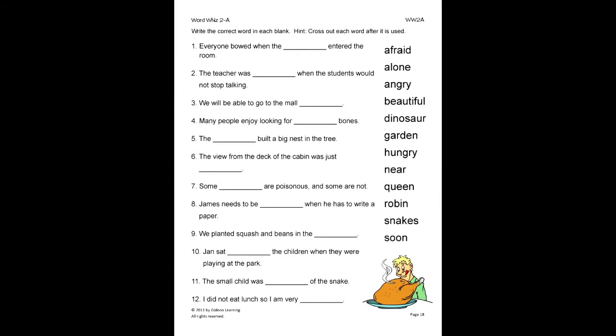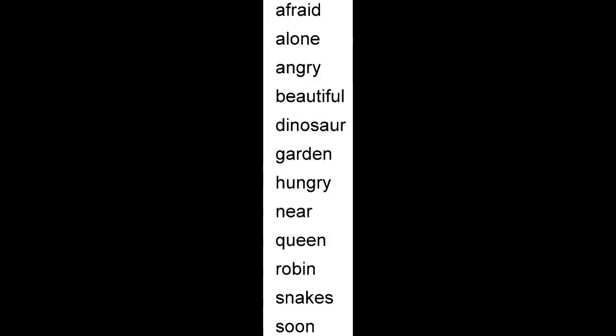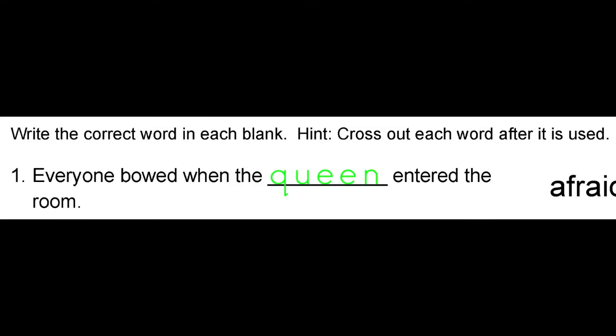On this activity, the student will write the correct word in each blank, cross out each word after it is used. Let's look at number one. Everyone bowed when the blank entered the room. So, we look at the word bank and find that queen is the correct word. So, we cross out the used word and write queen neatly in the provided space.